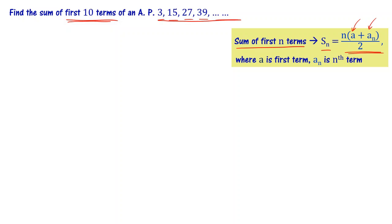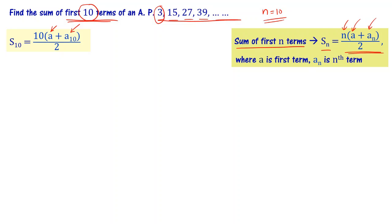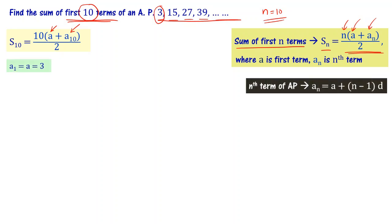Since we want the first 10 terms, n equals 10. The first term a equals 3. We also need the 10th term. The formula for the nth term is aₙ equal to a plus (n minus 1) times d. So a₁₀ equals a plus (10 minus 1) times d.